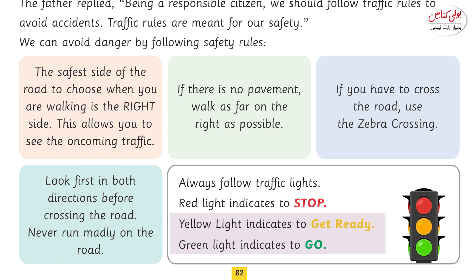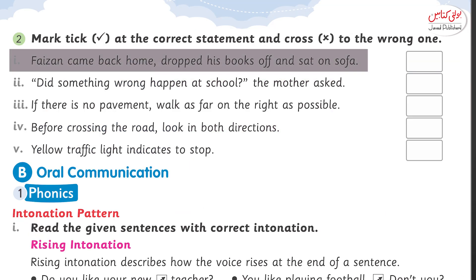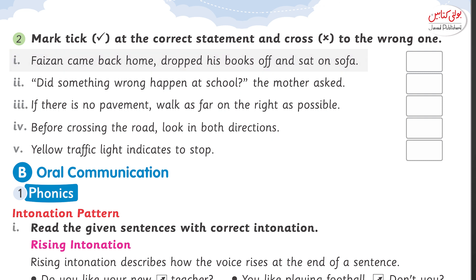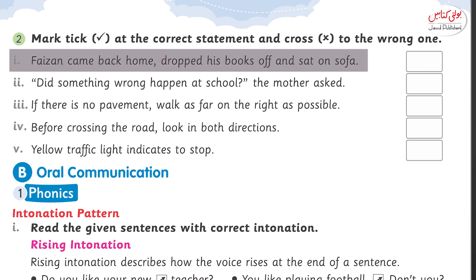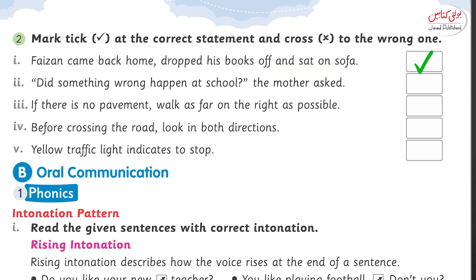On page number 84, we have to mark the statement correct or wrong. Number one: Faizan came back home, dropped his books off and sat on sofa. Correct.